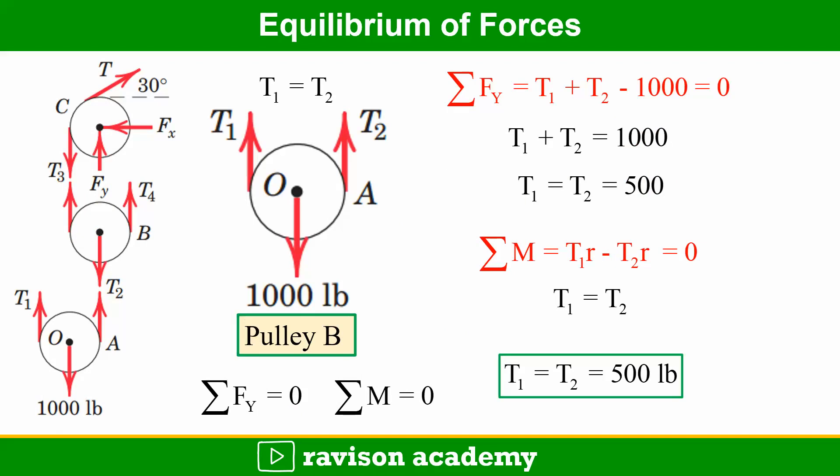Here summation Fy equals T1 plus T2 minus 1000 equals 0. So T1 plus T2 is equal to 1000. So T1 is equal to T2. Similarly, taking moments: T1 into R minus T2 into R equals 0. Here T1 is equal to T2, so T1 is equal to 500 pounds.